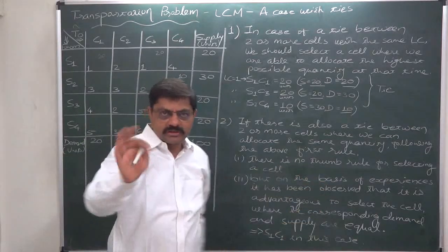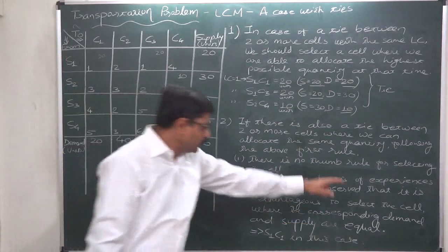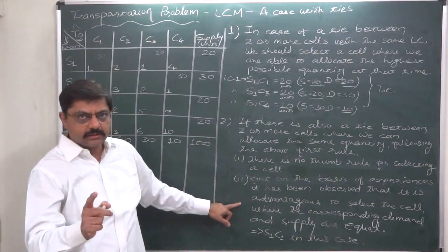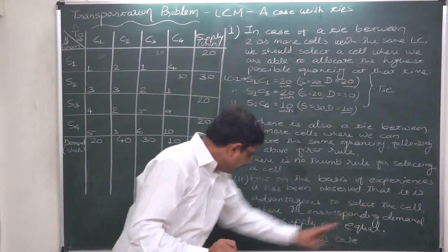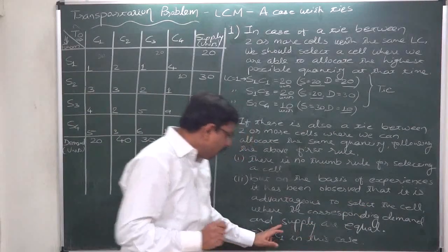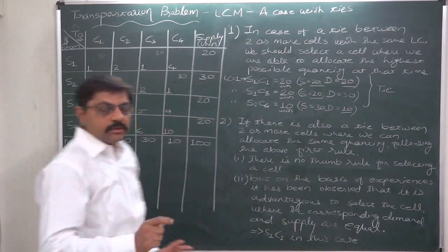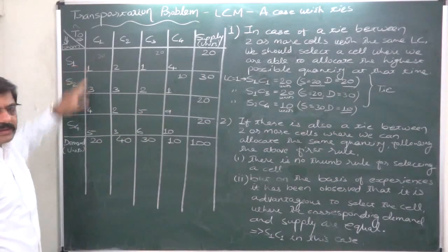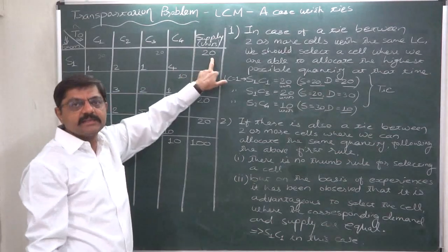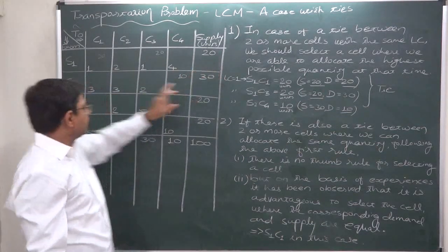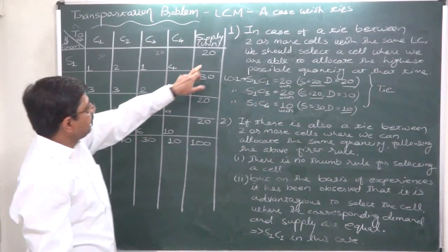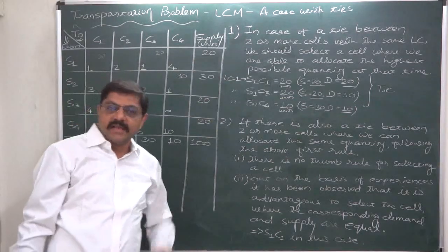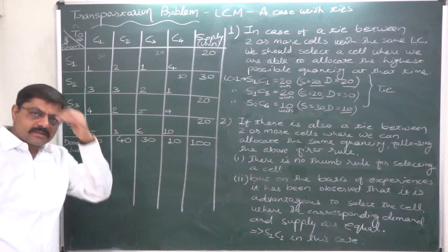The experience-based guideline is: select the cell where the corresponding demand and supply are equal. Look at S1C1 — demand is 20, supply is 20, meaning 100% of the demand is satisfied and 100% of the supply is exhausted. In contrast, in the other tied cell, demand is 30 and supply is 20; supply is 100% exhausted but demand is not fully satisfied. So S1C1 is preferable because both demand and supply are simultaneously satisfied and exhausted.